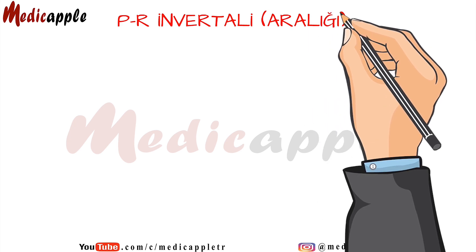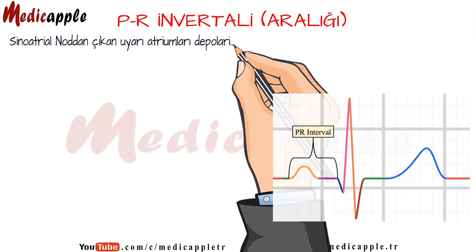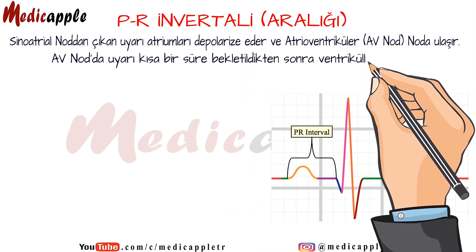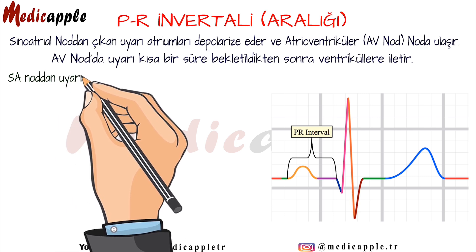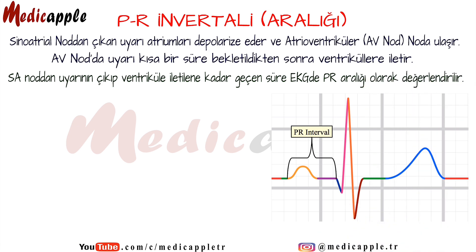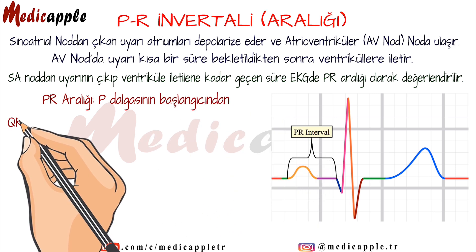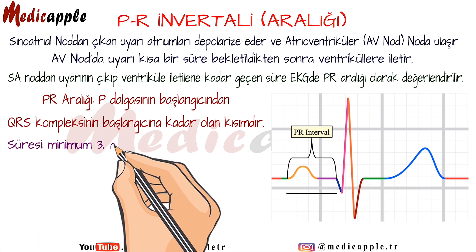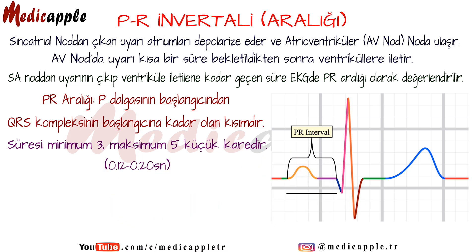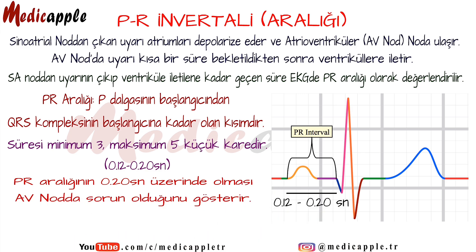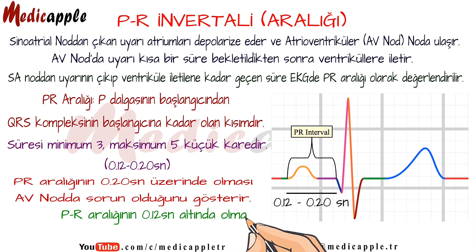PR Interval. The stimulus coming out of the sinoatrial node depolarizes the atria and reaches the AV node. After the message is kept in the AV node for a short time, it is transmitted to the ventricles. The time between the stimulus leaving the SA node and being transmitted to the ventricle is evaluated as the PR interval on the ECG. It is the part from the beginning of the P wave to the beginning of the QRS complex. Its duration is minimum 3 and maximum 5 small squares — that is, 0.12 to 0.20 seconds. A PR interval above 0.20 seconds indicates a problem with the AV node. A PR interval below 0.12 seconds is called pre-excitation syndrome.